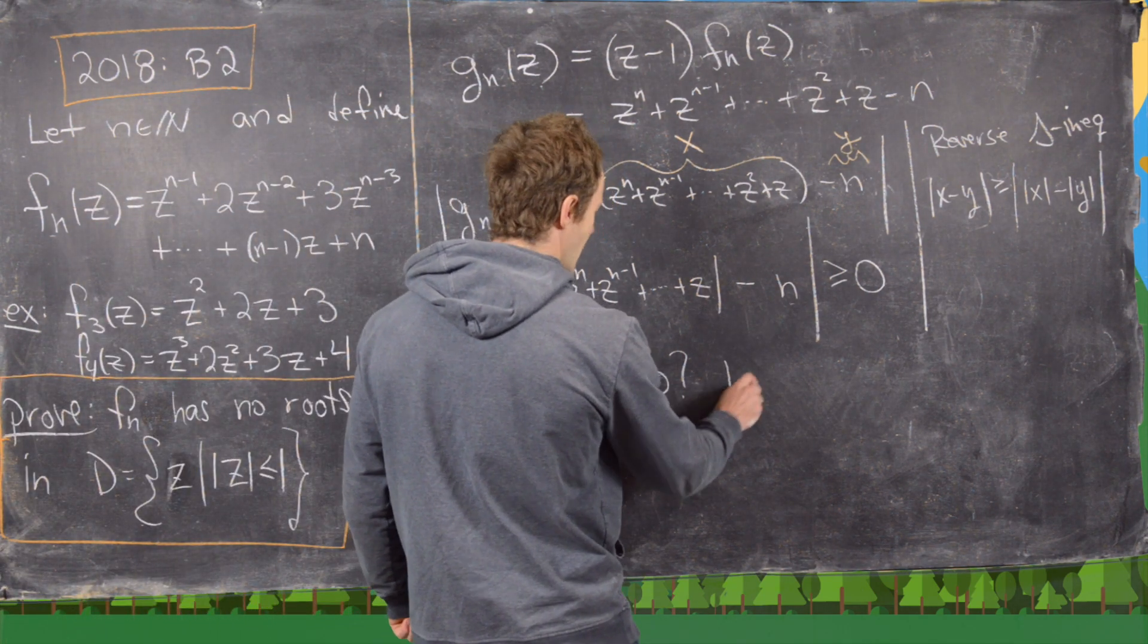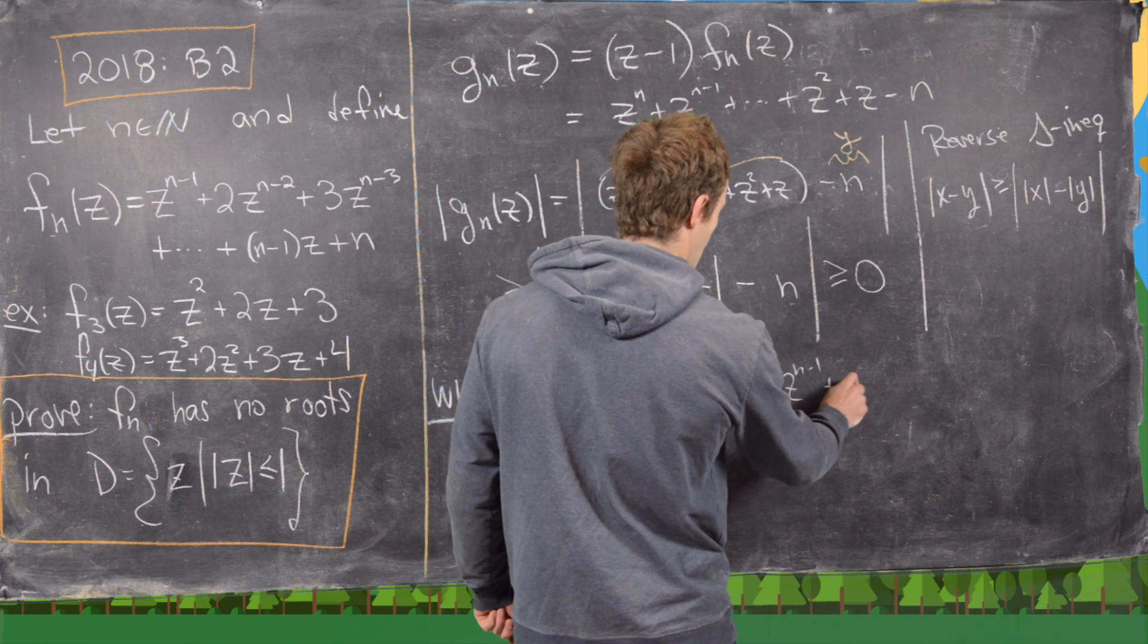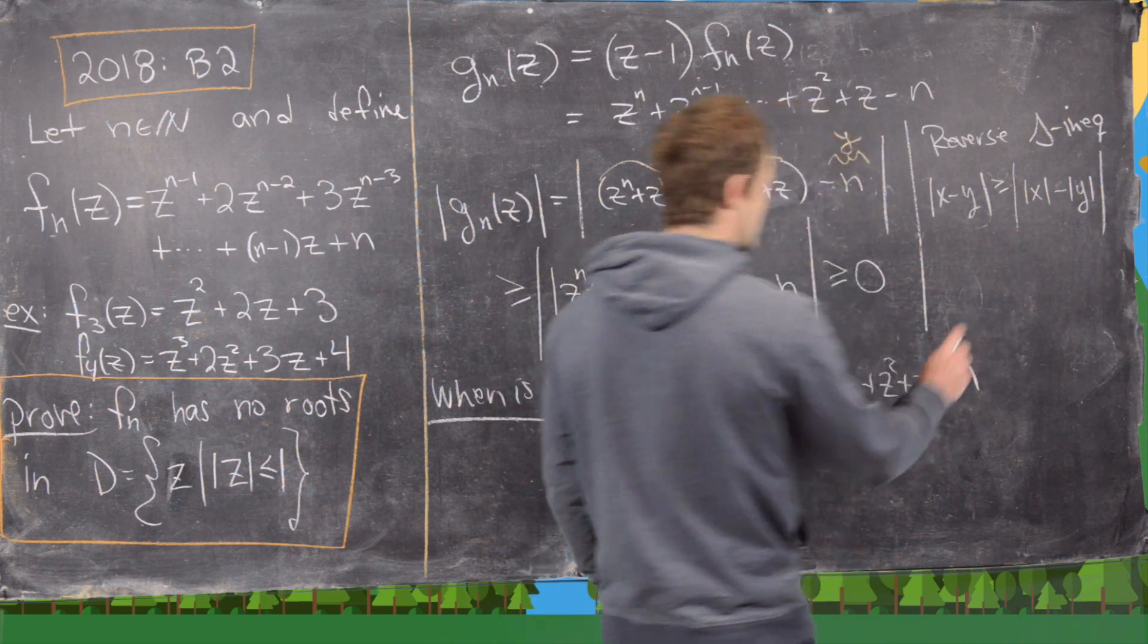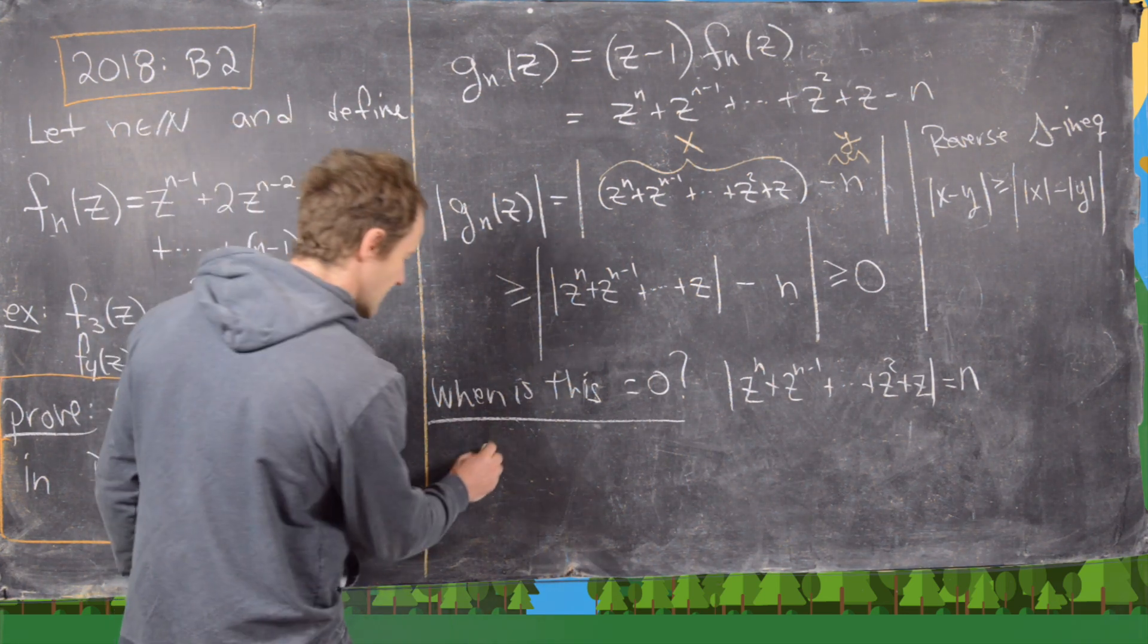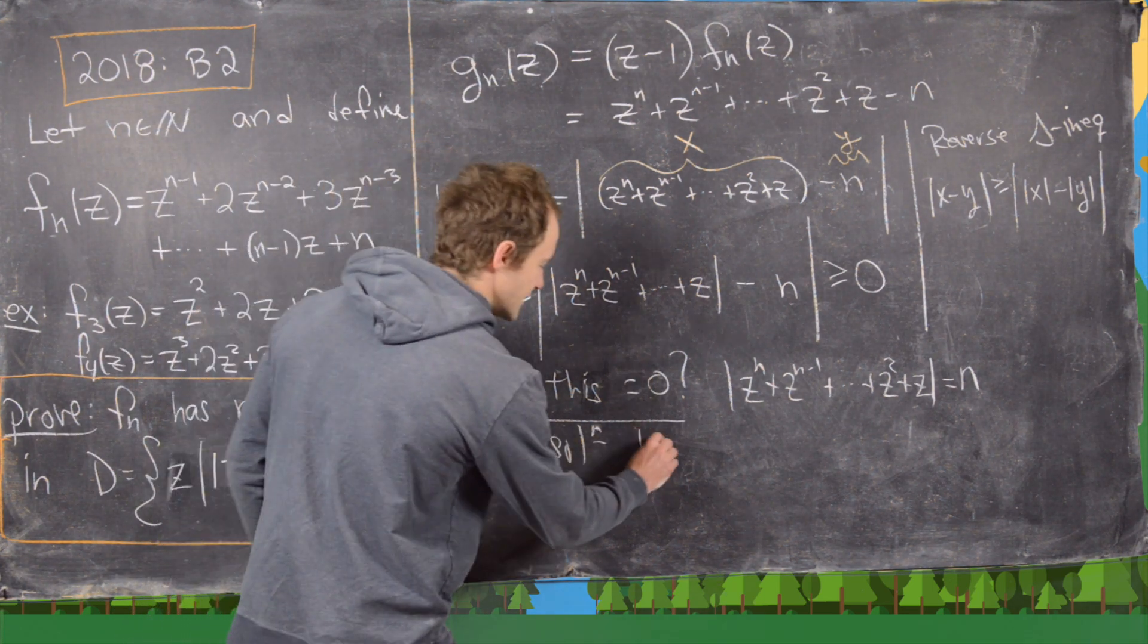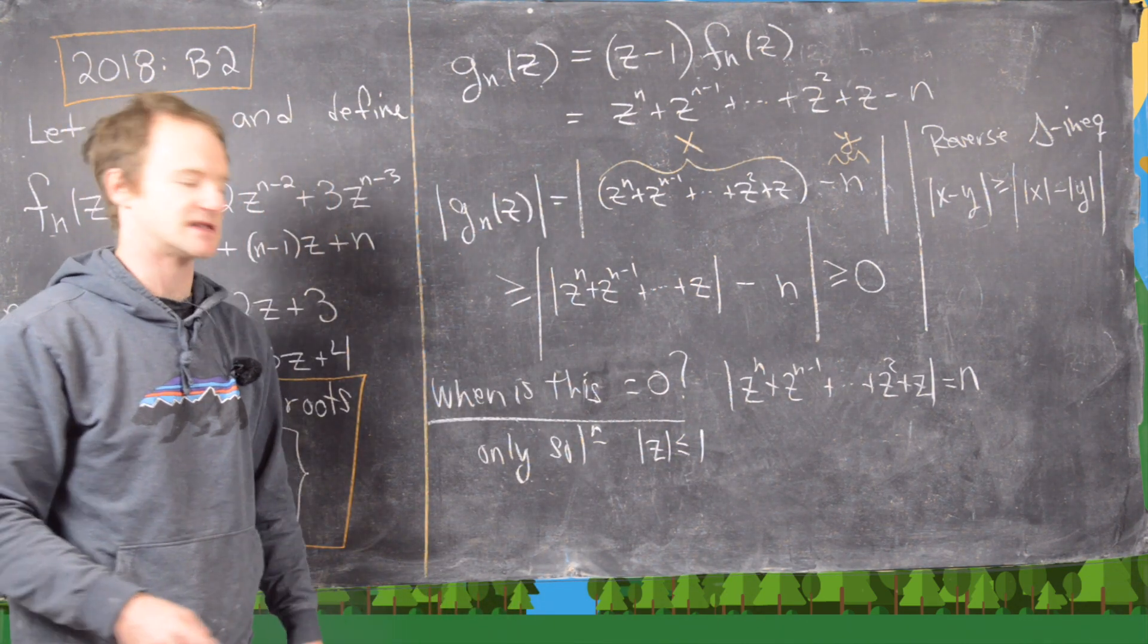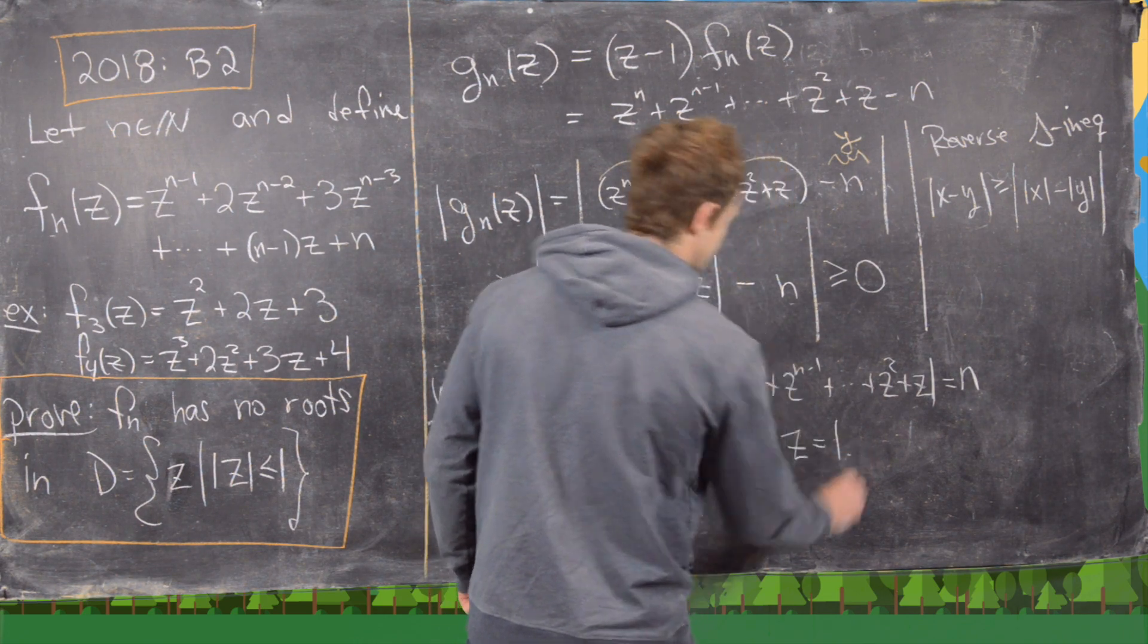So really we want to look at this question: when is this equal to zero? And it's equal to zero exactly when the modulus of zn plus zn minus 1 all the way down to z squared plus z equals n. And the only solution for this, for the modulus of z that we are interested in—in other words, the modulus of z is less than or equal to 1—is z equals 1.